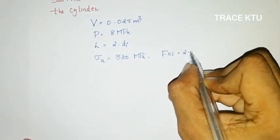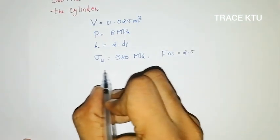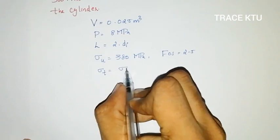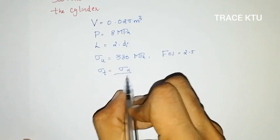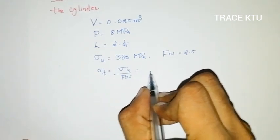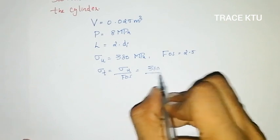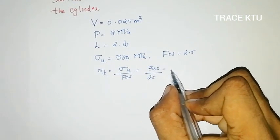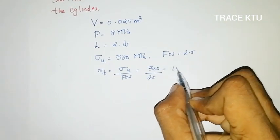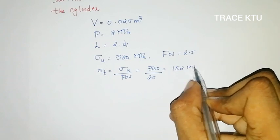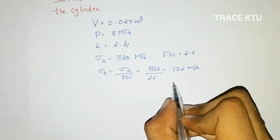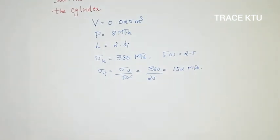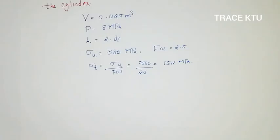Sigma u is equal to 380 MPa. Factor of safety is equal to 2.5. Therefore, allowable stress sigma t equals 380 divided by 2.5, which equals 152 MPa.